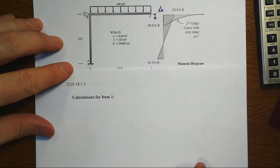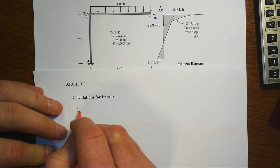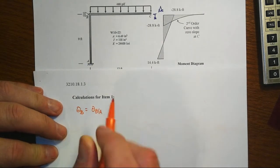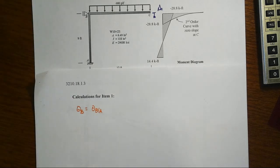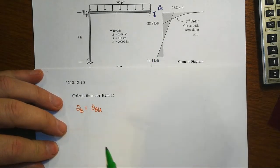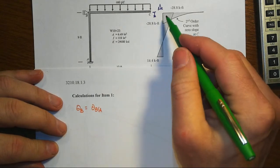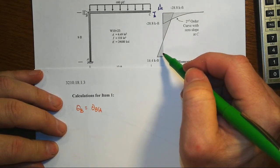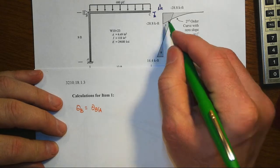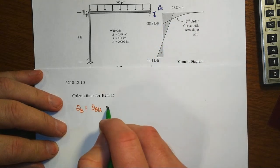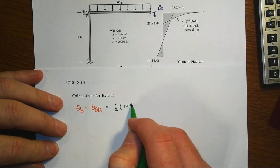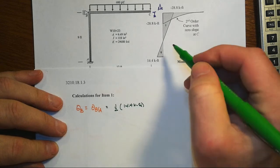Alright, so number one, let's go find theta B. That's equal to theta B with respect to A and that's going to be first moment area theorem, that's just the area between these two points under the M over EI diagram. We have the moment diagram, there's two different signs, there's a plus and a minus,